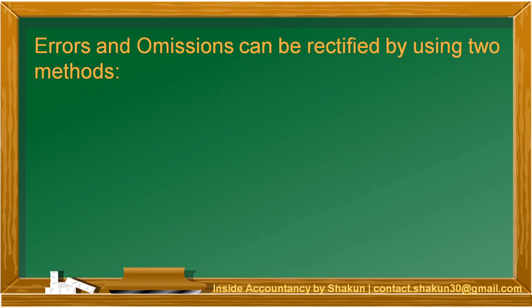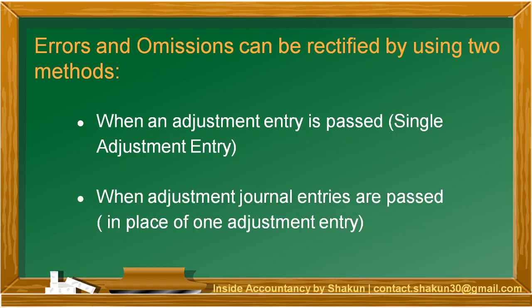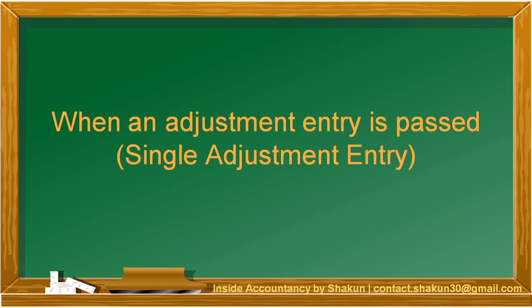The errors and omissions can be rectified by using two methods. The first is when a single adjustment entry is passed — only by passing a single entry, the errors can be rectified. The second method is when adjustment journal entries (plural) are passed, meaning multiple entries are passed in place of one adjustment entry to rectify the errors or omissions. In this video, we will be talking about the first method — rectifying errors by passing a single adjustment entry.